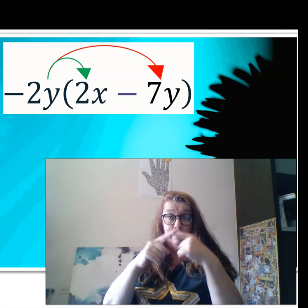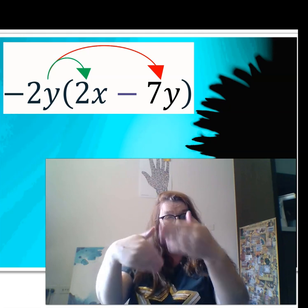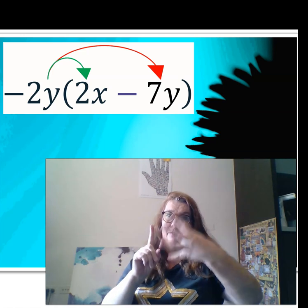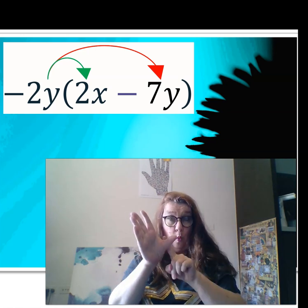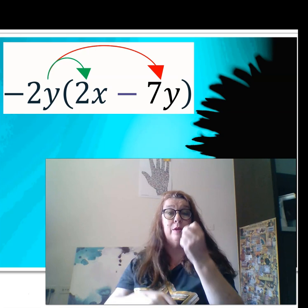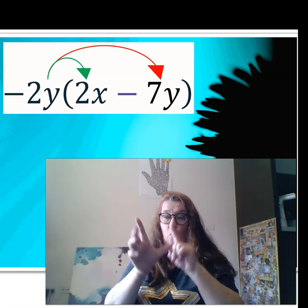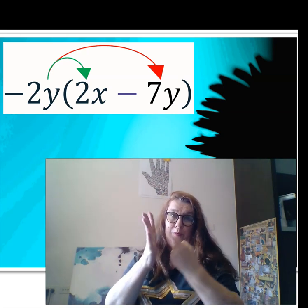Negative two times negative seven. When we follow the rule of the process, it becomes positive 14. Y times y is y squared, or y to the power of two.